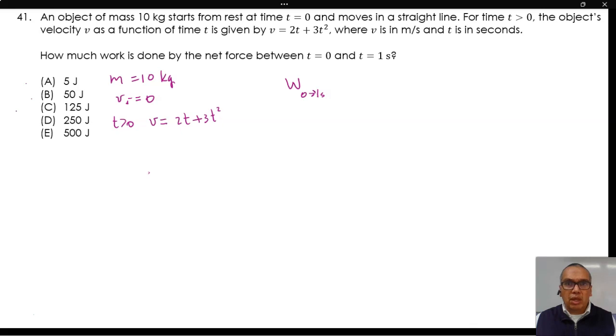In order to determine the work, we need the integral of the force. We have a velocity function which will yield an acceleration function of 2 plus 6t. Therefore, the net force is 20 plus 60t. We have to be careful because the work is the integral of the force relative to position, not relative to time. But we can work around that by establishing the following relationship.